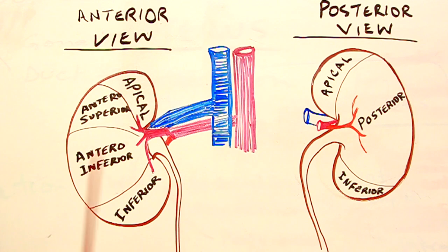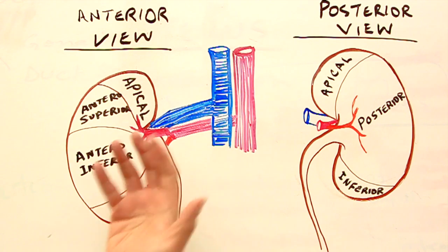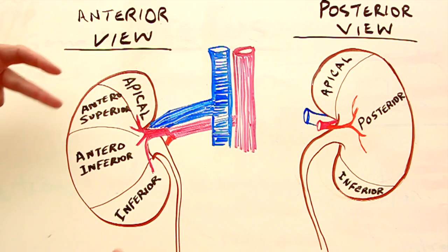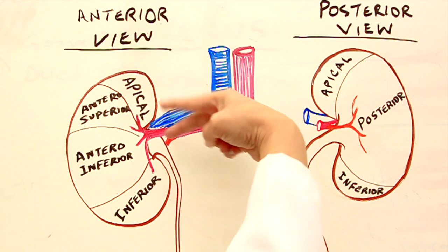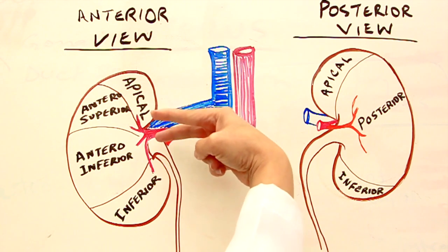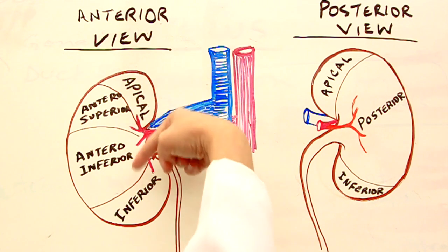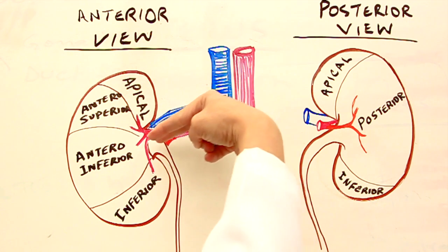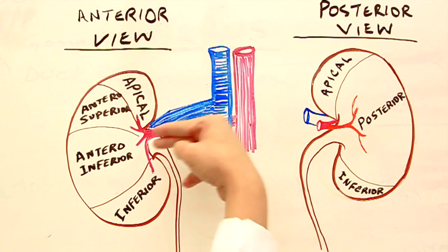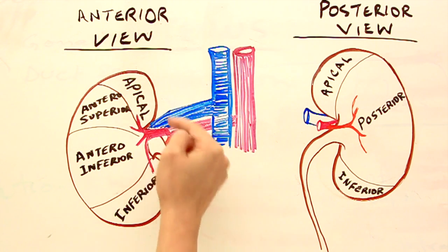As they enter the hilum, this is an anterior view of a kidney. Imagine my fingers are the two divisions of the renal artery. The anterior division is covering the anterior surface, and the posterior division goes further behind, entering the kidney from behind through the hilum.